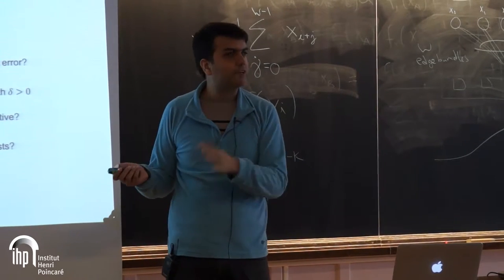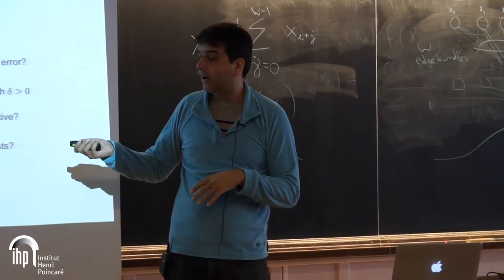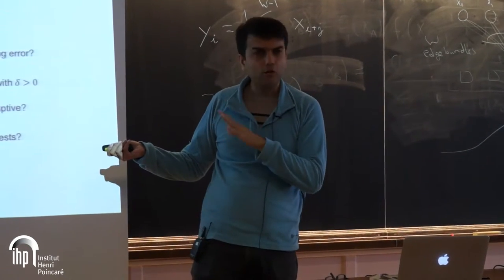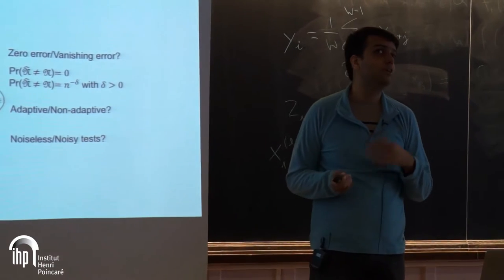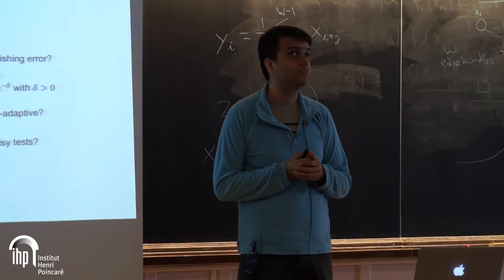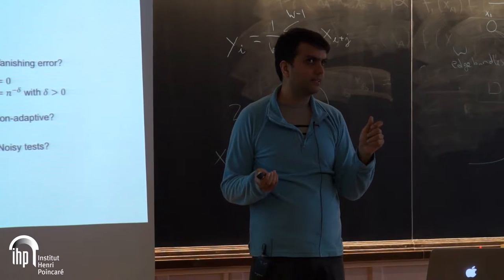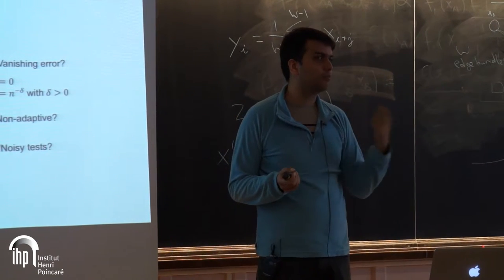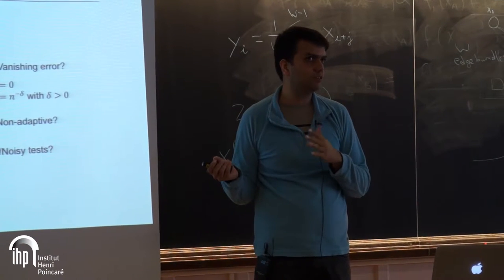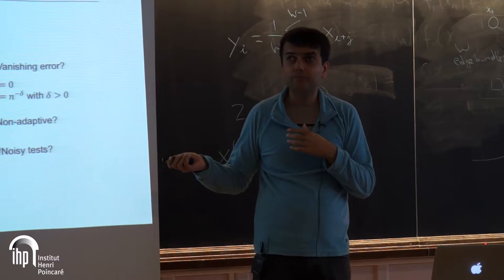Sometimes you want to limit the number of stages of adaptivity — that's also another model. You could also imagine models where your tests have noise. A commonly studied noise model is one where the test outcome goes through a binary symmetric channel — a positive could flip to become a negative with probability p, and a negative could flip to positive with probability p.